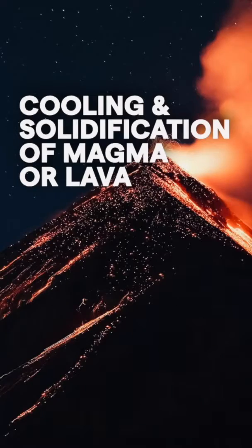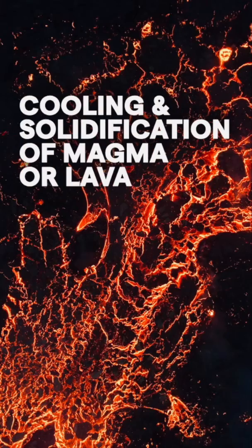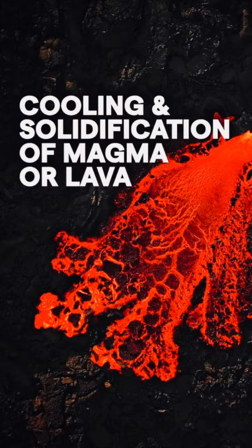Let's talk about igneous rocks. Igneous rocks form from the cooling and solidification of magma or lava. This can happen on the surface of the earth or deep within the crust.